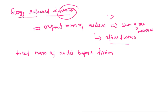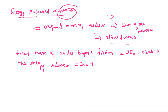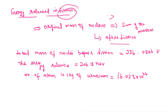The total mass of the nucleus before fission is 236.0526. The energy released is equal to 2.67 mega electron volt. The number of atoms in 1 kg of uranium can be found using 6.23 into 10 power 26 divided by 235. Finally, the total energy produced is 5.128 into 10 power 26 mega electron volt.